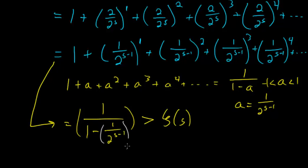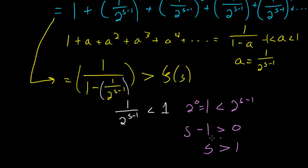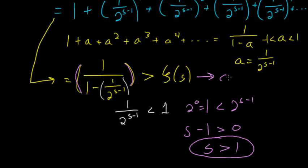So we need 1 over 2 to the s minus 1 to be smaller than 1. We can solve for s by multiplying each side by 2 to the s minus 1, giving us 1 is less than 2 to the s minus 1. We can rewrite 1 as 2 to the 0 power, which lets us directly compare the exponents: s minus 1 has to be bigger than 0. Adding 1 to each side, we find that s has to be bigger than 1. So the zeta function converges when s is greater than 1.